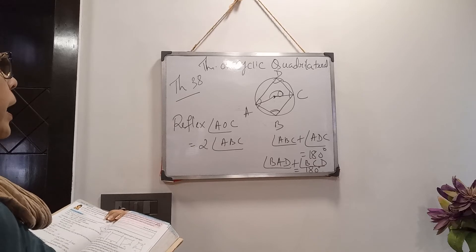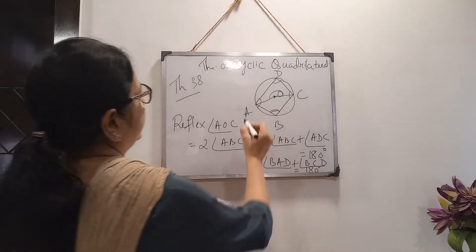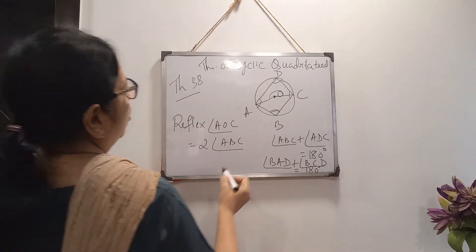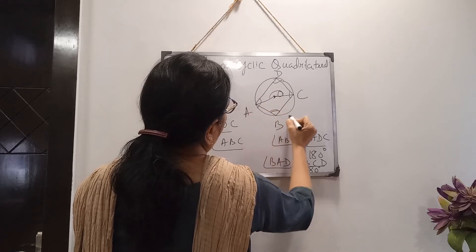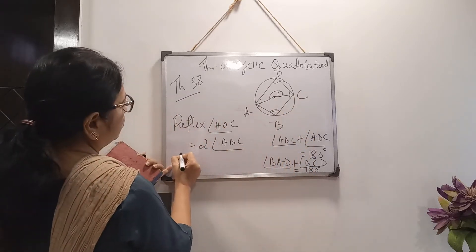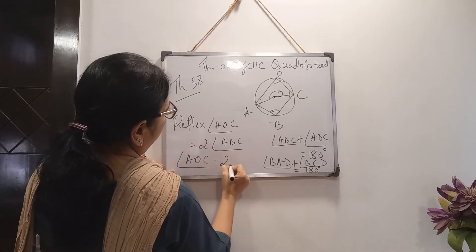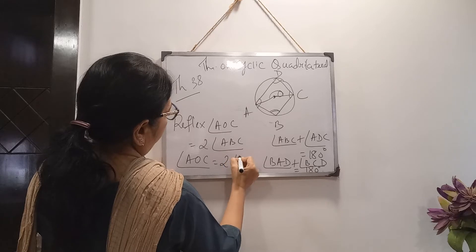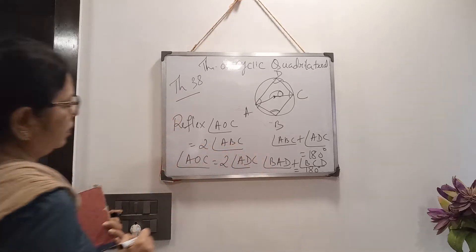Again, angle AOC and angle ADC are on the same arc ABC. So from the same theorem, we can write: angle AOC equals twice of angle ADC.